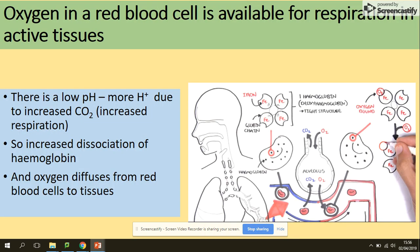Oxygen in red blood cells is available for respiration in the respiring tissues. The process of respiration requires glucose and oxygen, and the products are carbon dioxide, water and ATP.